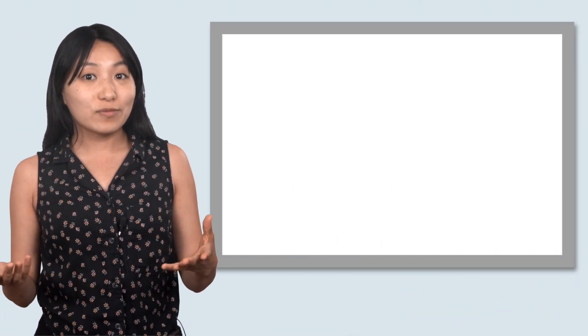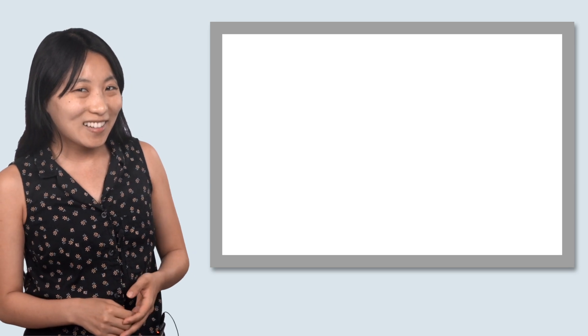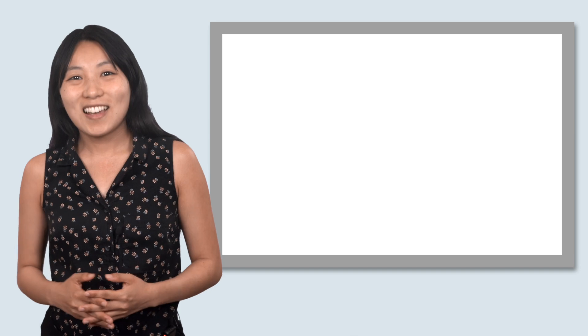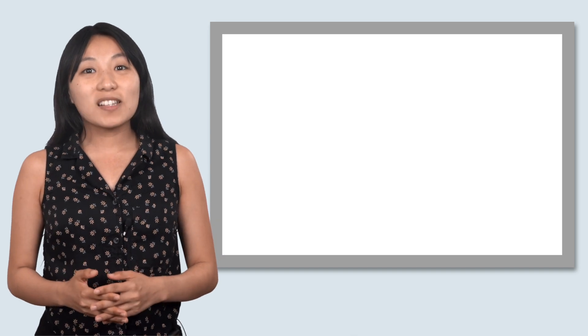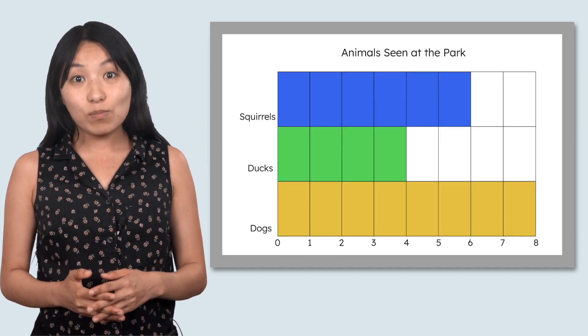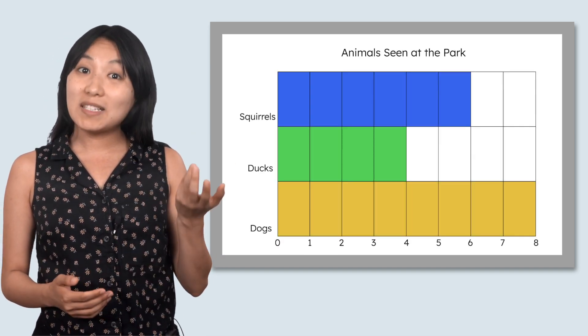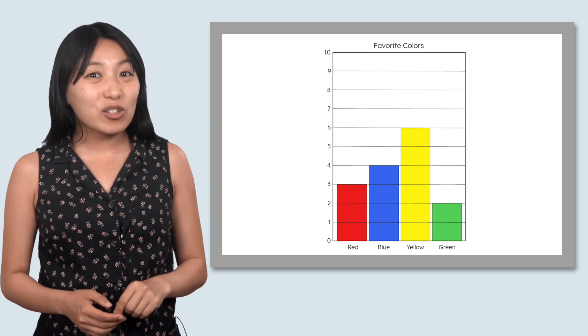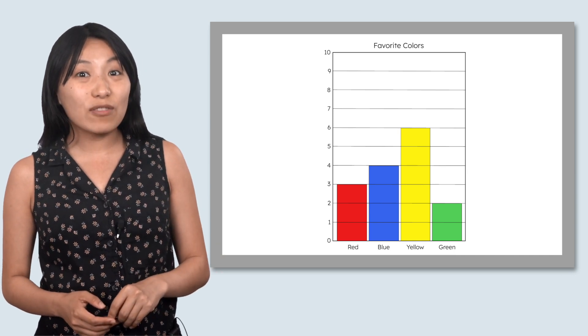The graph in our math mystery is called a bar graph. Can you guess why? It's because the data is organized into bars. These bars can go sideways, like this, or up and down, like this. Let's take a closer look at this graph.